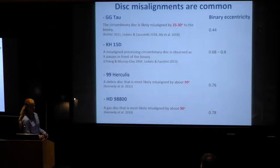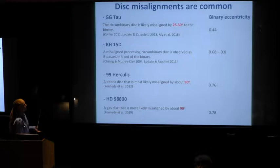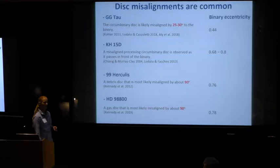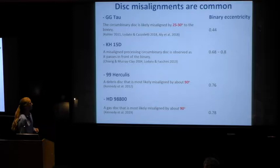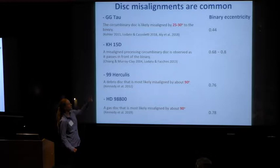A few more examples of misalignments to show that they're common. GGTau has a circumbinary disk misaligned by 25 to 30 degrees. KH15D — we're not entirely certain of the misalignment, but we see that the disk precesses and covers up the stars, so we know the disk must be misaligned. 99 Hercules is a debris disk misaligned by 90 degrees to the binary orbital plane. And HD98800, recently found, is a gas disk misaligned by 90 degrees. The eccentricities of all the binaries in these cases are significant.